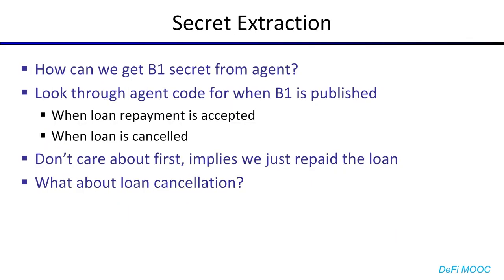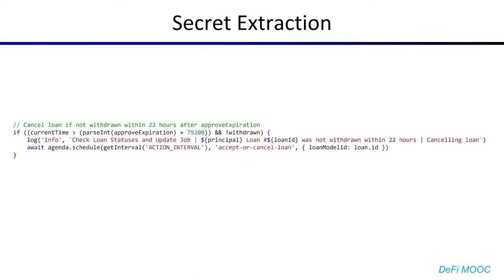That takes care of how we get a loan without locking up Bitcoin at all. What about getting a loan, locking Bitcoin, and then unlocking it without repaying the loan? To do that, we need to get the B1 secret from the agent. Looking through the agent for where B1 is published, there are two cases: either the loan payment is accepted, or the loan itself is cancelled. We don't really care about the first because that implies we just repaid the loan, but the loan being cancelled sounds interesting. If the loan has been approved but not withdrawn for 22 hours, the agent will automatically cancel the loan, and cancelling involves publishing the B1 secret so that Alice can withdraw her collateral.